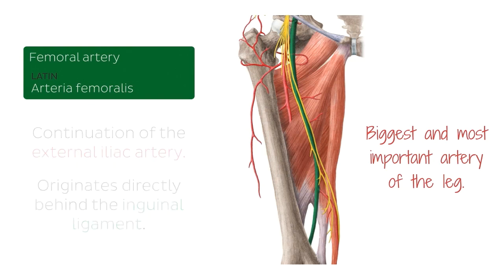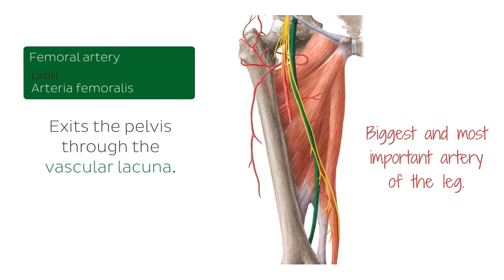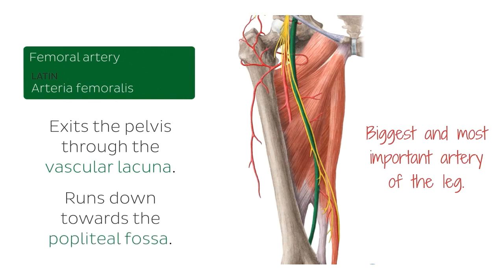When it exits the pelvis through the vascular lacuna, it runs down toward the popliteal fossa, as you can see here. From there, we begin calling it the popliteal artery. During its course, the femoral artery gives off several branches, some of which we will be discussing in this tutorial.